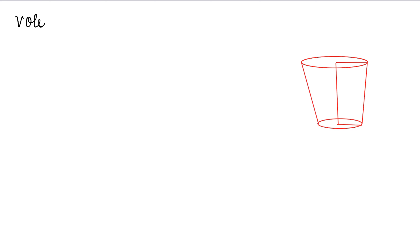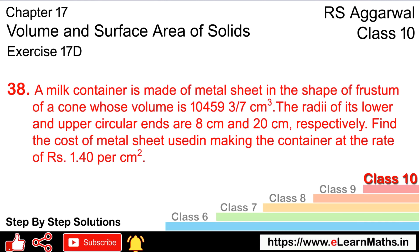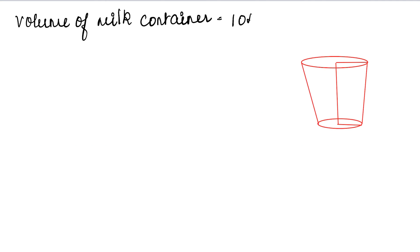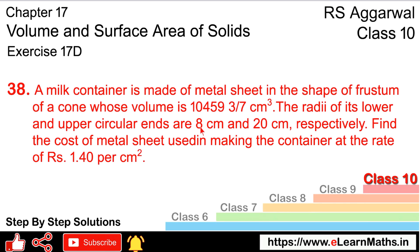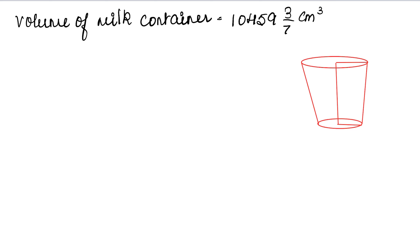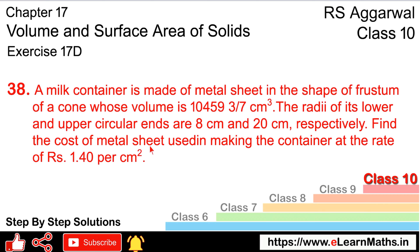हम पहले milk container बना लेते हैं जैसे कह रहा है। यह हमारा milk container है, उसका volume दे रखा है — volume of milk container 10459 और 3/7 cm cube। Radius नीचे का 8 cm और ऊपर का 20 cm। Find the cost of the metal sheet used in making the container at the rate of rupees 1.40 per cm square.